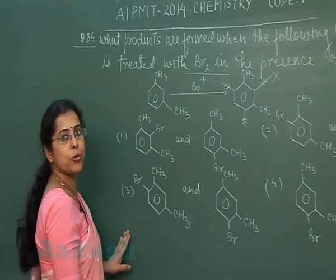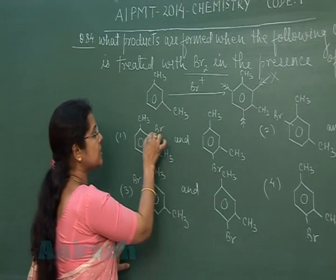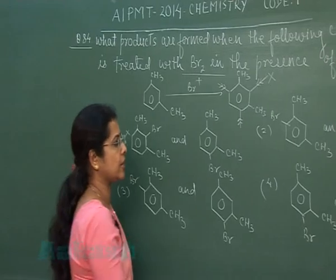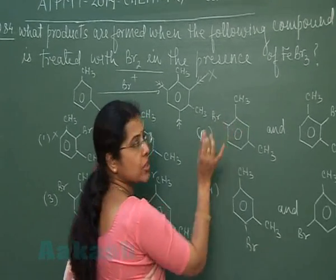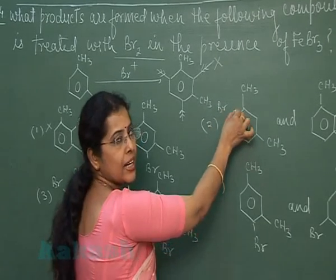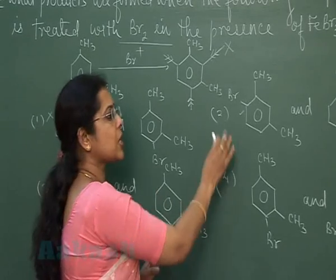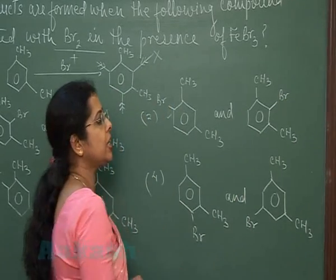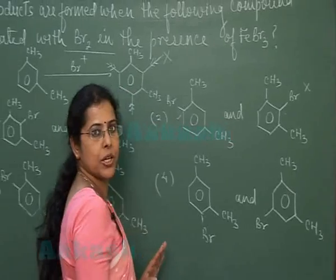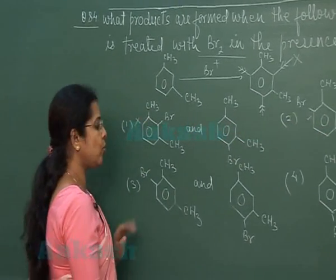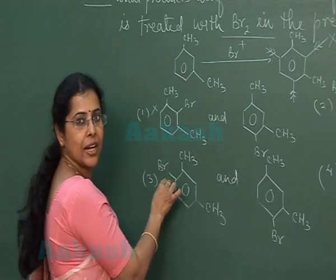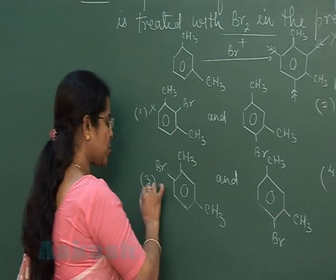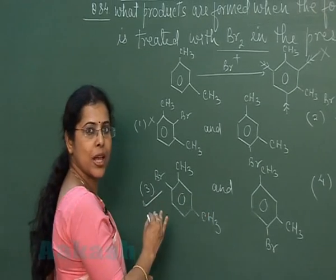Looking at the options: the first option has Br attached at a sterically hindered position, which is not possible — so this option is incorrect. In the second option, the first structure has bromine attacking at a sterically hindered position, and in the other compound bromine is also at a sterically hindered position — so this option is also incorrect. The third option has bromine attacking at allowed positions in both compounds, so this option is correct.